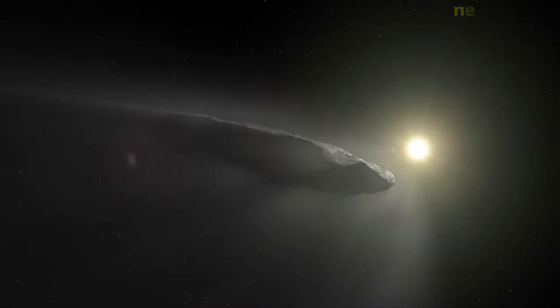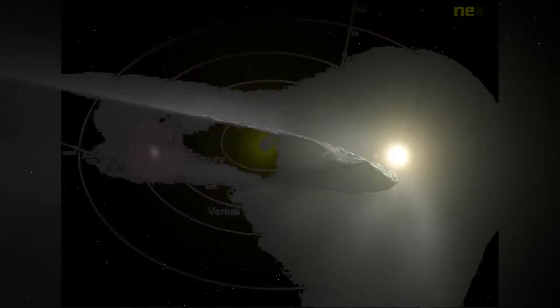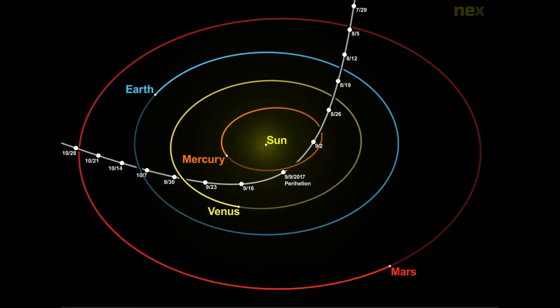This was approximately 40 days after it passed its closest point to the sun on 9 September. When first observed, it was about 33 million kilometers from Earth and already heading away from the sun.